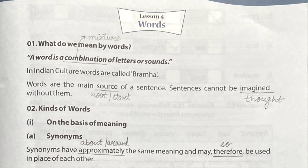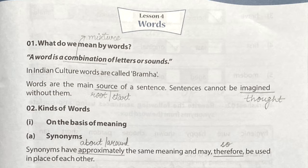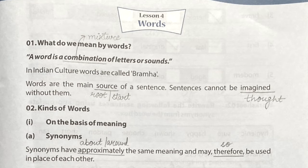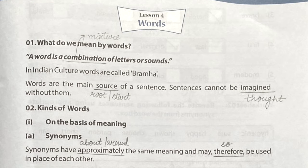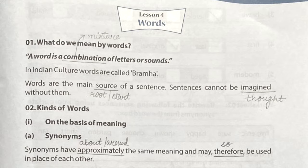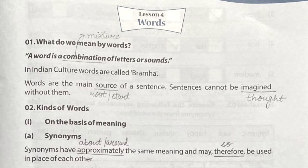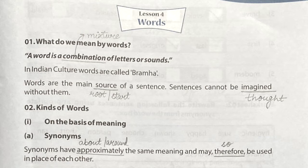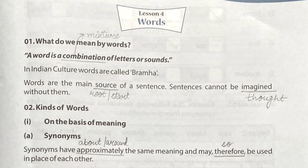Now I am going to start with the discussion of the chapter. First of all, what do we mean by words? What do we understand by words? A word is a combination — a word is a mixture of letters or sounds. As we understood earlier, at the first level we learn the shape, sounds, and syllables, and then we learn how to make words based on those sounds. So a word is a combination, a mixture of letters or sounds.